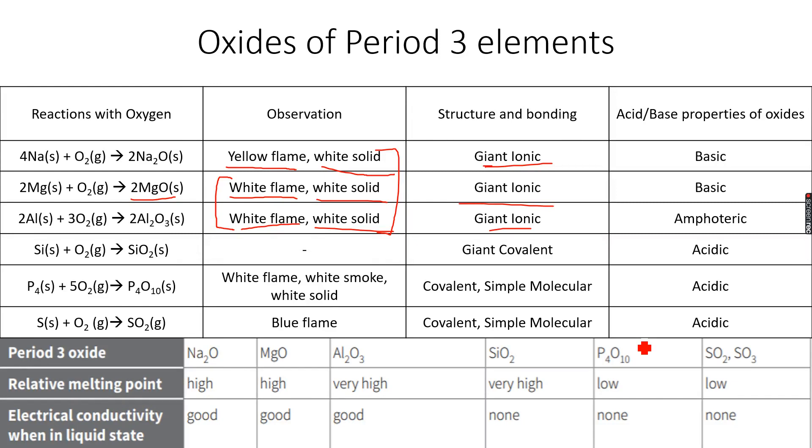Which is phosphorus oxide. Now we see a white flame, we see white smoke when the reaction takes place and we see a white solid. So you need to remember these three.